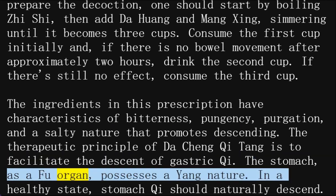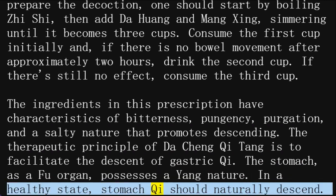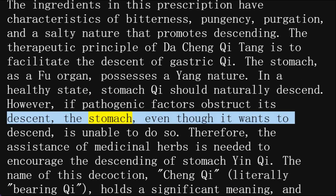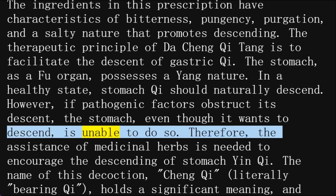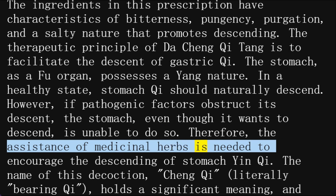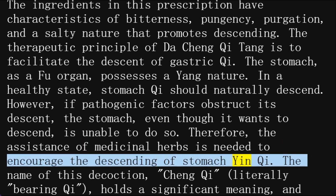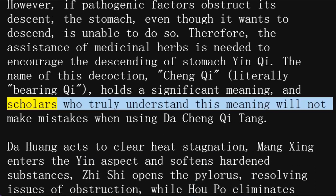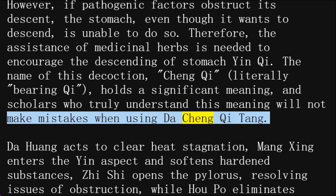The stomach, as a fu organ, possesses a yang nature. In a healthy state, stomach qi should naturally descend. However, if pathogenic factors obstruct its descent, the stomach, even though it wants to descend, is unable to do so. Therefore, the assistance of medicinal herbs is needed to encourage the descending of stomach yin qi. The name of this decoction, cheng qi, literally 'bearing qi,' holds a significant meaning, and scholars who truly understand this meaning will not make mistakes when using Da Cheng Qi Tang.